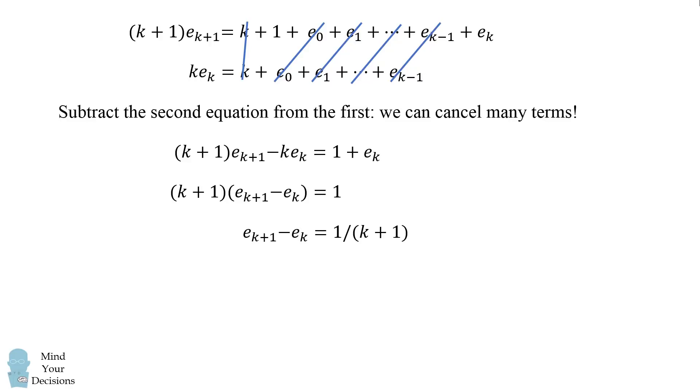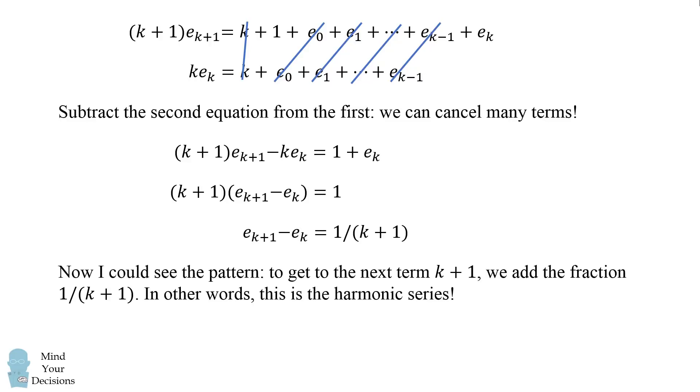Now, I understood what this meant. Here's the pattern. To get to the next term in the sequence, we add the fraction 1 over the next term. So, to get to the term k plus 1, we add 1 over k plus 1. In other words, this is the harmonic series. And I could then write out the explicit form for the pattern going up to n. e of n equals 1 plus 1 half plus 1 third plus 1 fourth all the way to 1 over n.